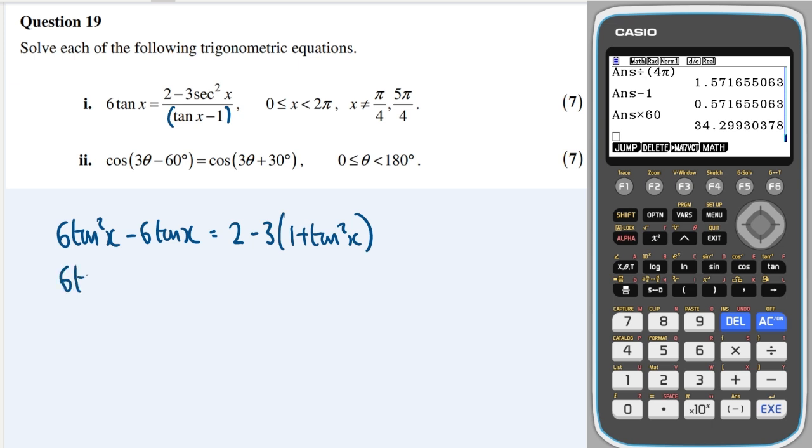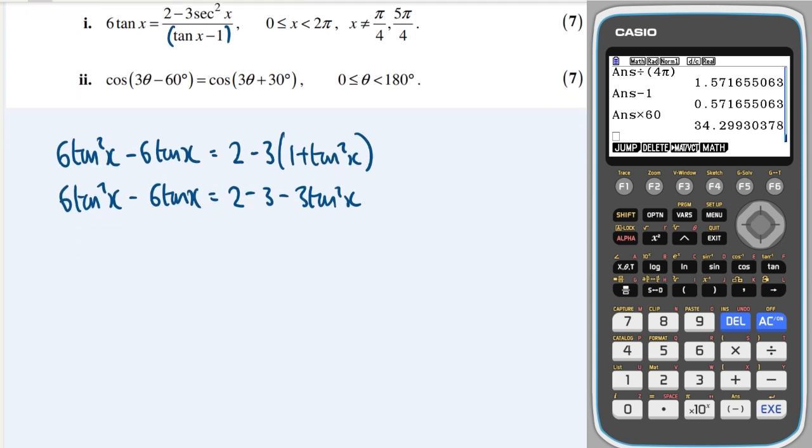So let's multiply out to get 2 minus 3 minus 3tan²x. Let's bring them all over to one side and we'll get 9tan²x minus 6tanx, that's minus 1, bring it to this side plus 1 equals 0.